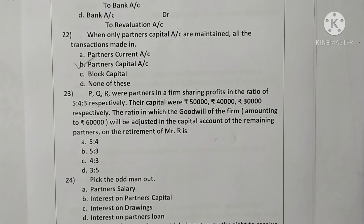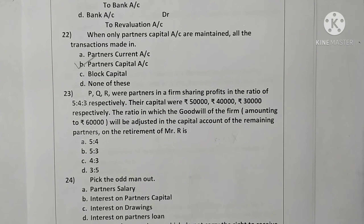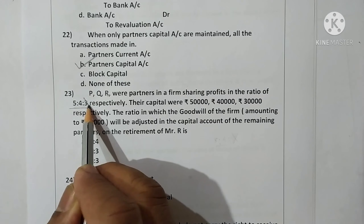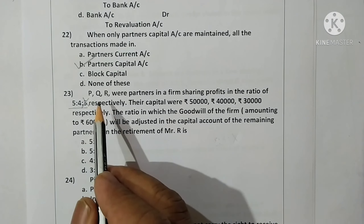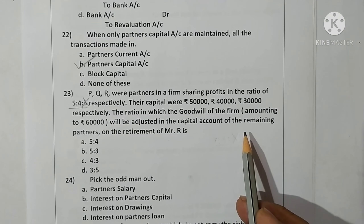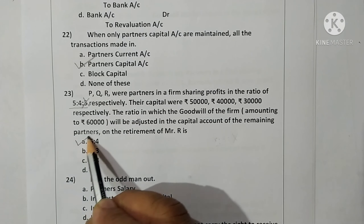Question twenty-three: P, Q, R were partners in a firm sharing profits and losses in ratio 5:4:3; capitals Rs. 50,000, Rs. 40,000, Rs. 30,000 respectively. The ratio in which goodwill will be adjusted in remaining partners' capital accounts on retirement of R — profit sharing ratio is 5:4:3; R retires, so remaining ratio is 5:4. Goodwill will be adjusted in this ratio. Option A is correct.